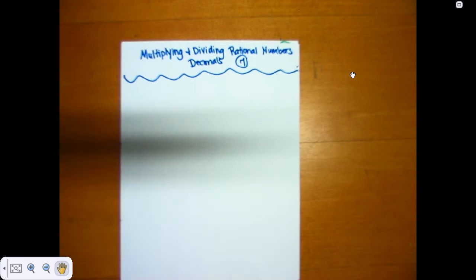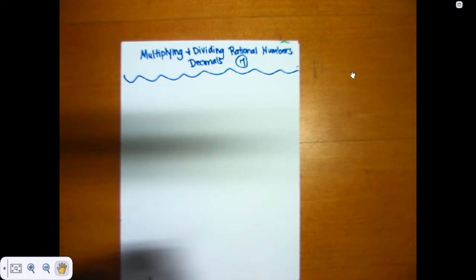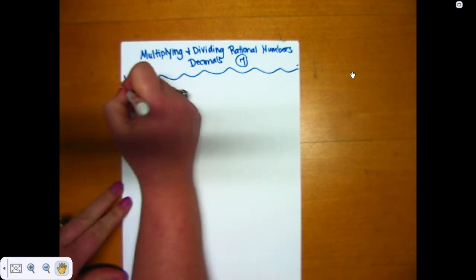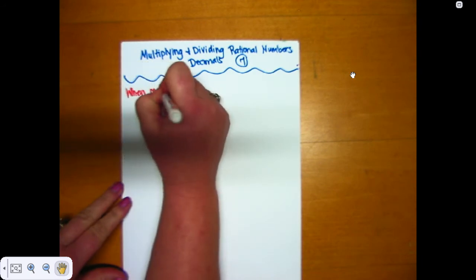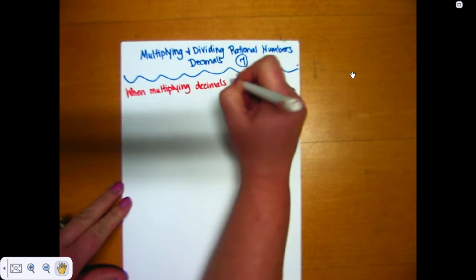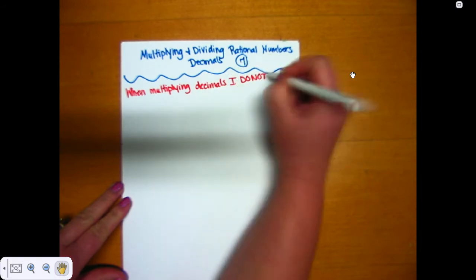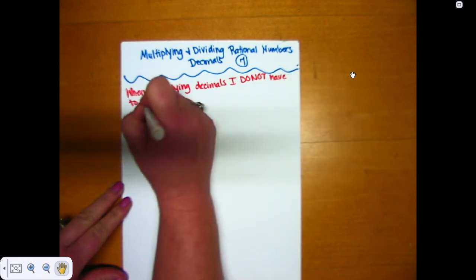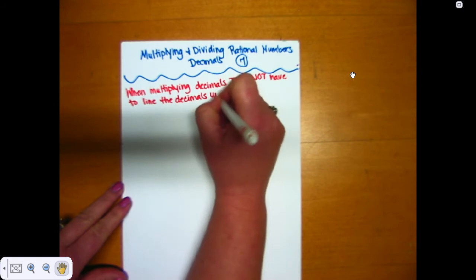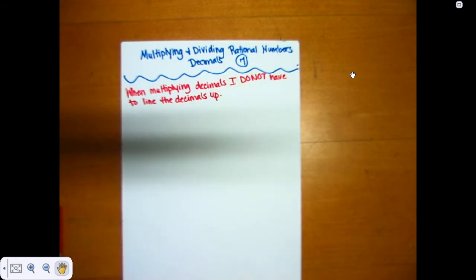When we multiply decimals, there's one thing that's different from adding and subtracting. When we add and subtract decimals, we have to line the decimal up, but when we're multiplying, we do not have to line the decimal up. Let's make a note of that: when multiplying decimals, we do not have to line them up.